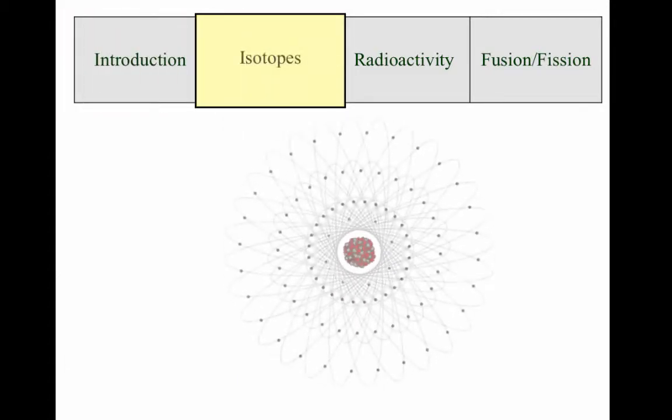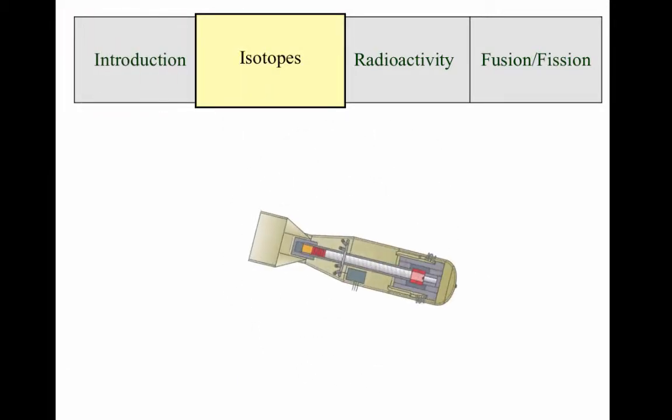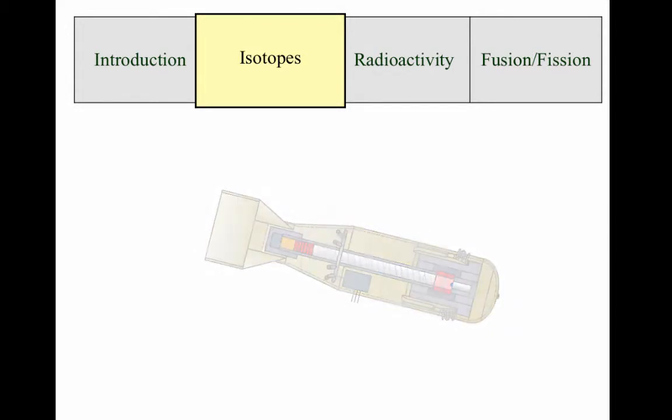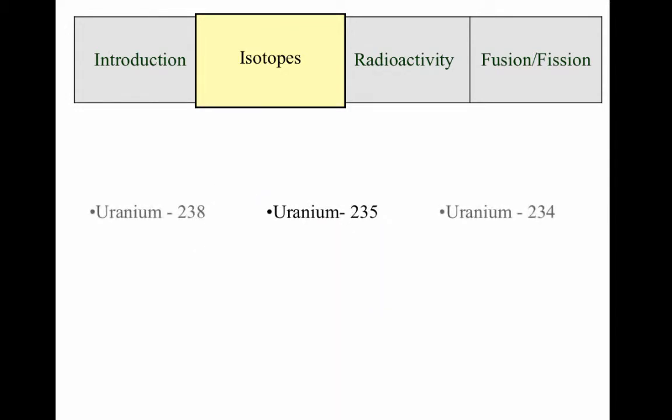This discovery led to its use as the first nuclear weapon, Little Boy. Uranium-235 is the isotope of uranium used in nuclear weapons and reactors. The other two major isotopes of uranium are uranium-238 and uranium-234.